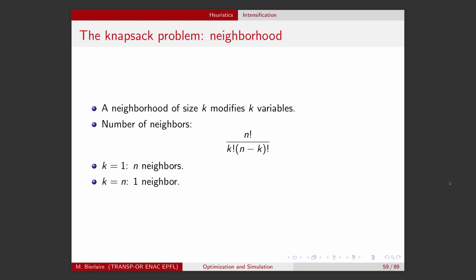This is interesting because it shows how we should look at the complexity of the neighborhood — we want it to be not too small and not too large. A neighborhood of size k modifies k variables. The number of neighbors is n factorial divided by k factorial times (n minus k) factorial. If k equals 1, you have n neighbors. If k equals n, you have only one neighbor, which is definitely too small.